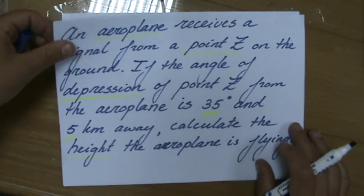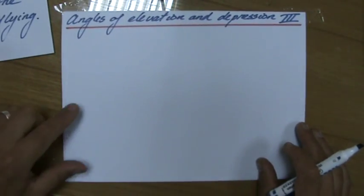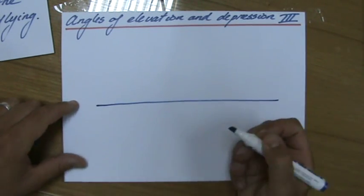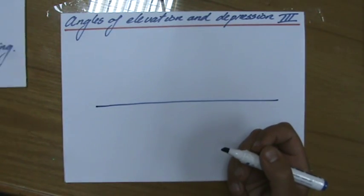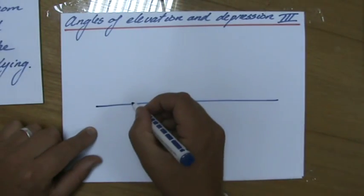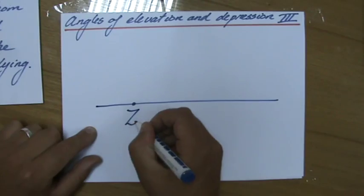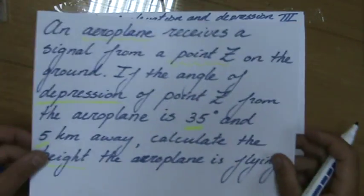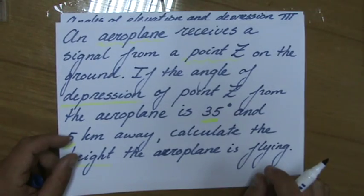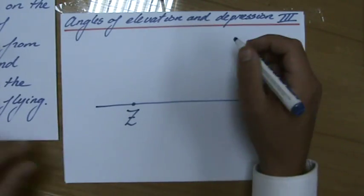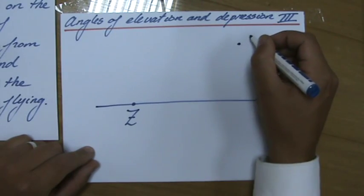Now, like I said, you always make a sketch of this situation. So we have the ground, let me just quickly sketch that. And on the ground we have a point Z, so let's do that over here. So that is point Z. All right, let's continue. We also have an airplane in the air. Let's say that airplane is here.